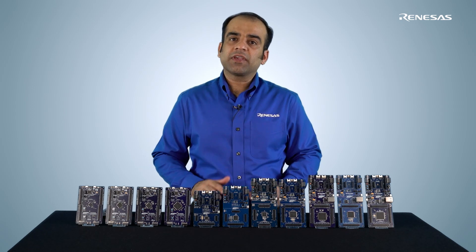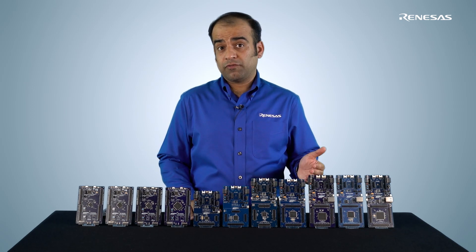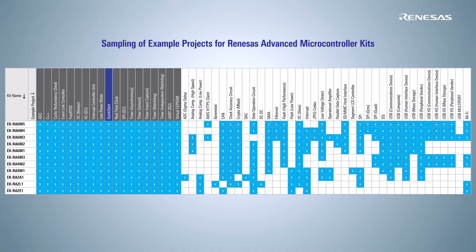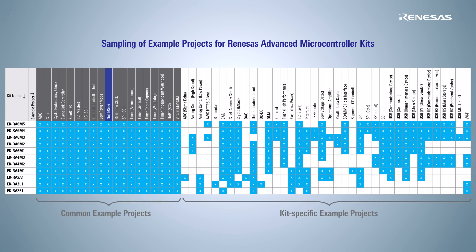Kit-specific example projects typically demonstrate features available on that kit. There are more than 600 example projects across different kits for different toolchains, and many more are being created. You can pause the video here to review the sampling of the common and kit-specific example projects. You could also refer to this table as you shortlist the kits that feature the MCU with peripherals required for your use cases.